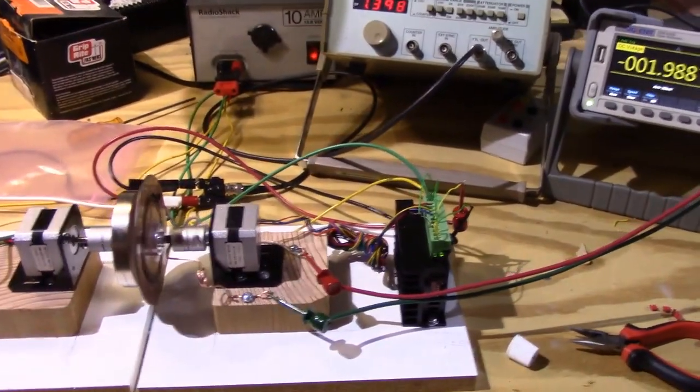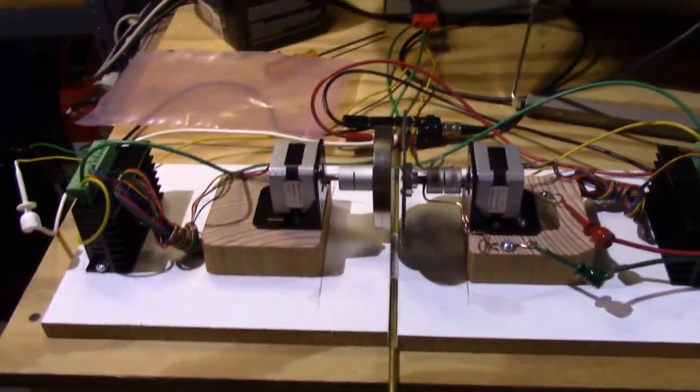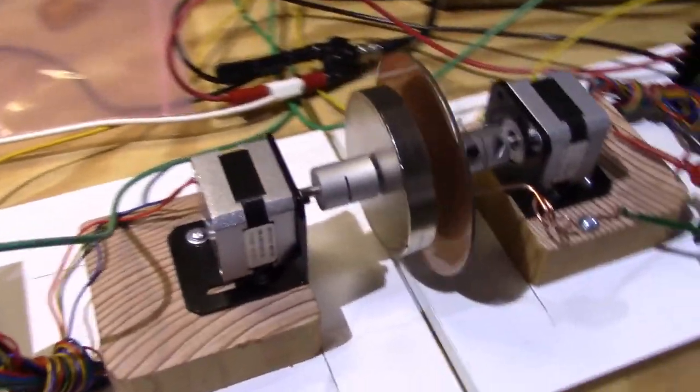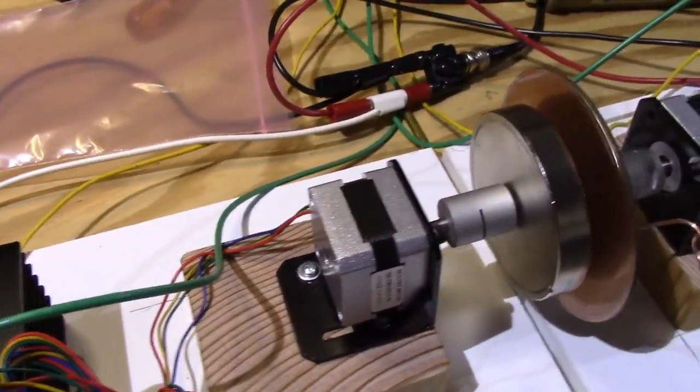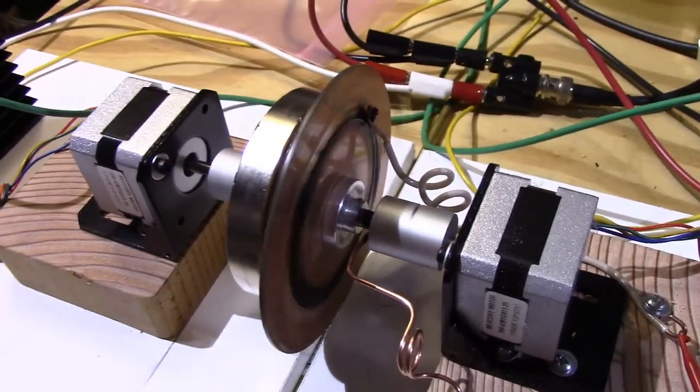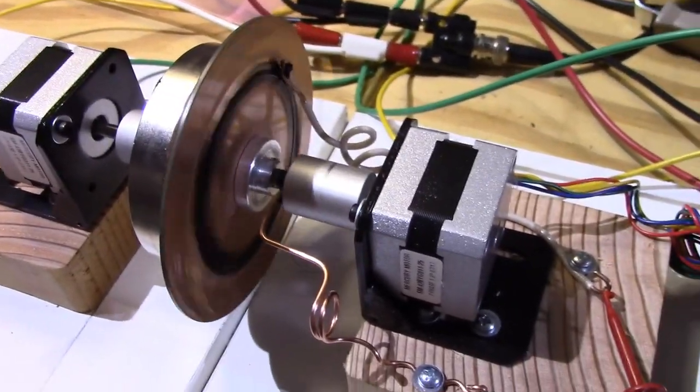Hi, welcome to the demonstration of the Paradox 1A. What we have here is a disc magnet driven by one stepper motor. It's off right now, and the conductive disc with a brush system driven by another stepper motor.